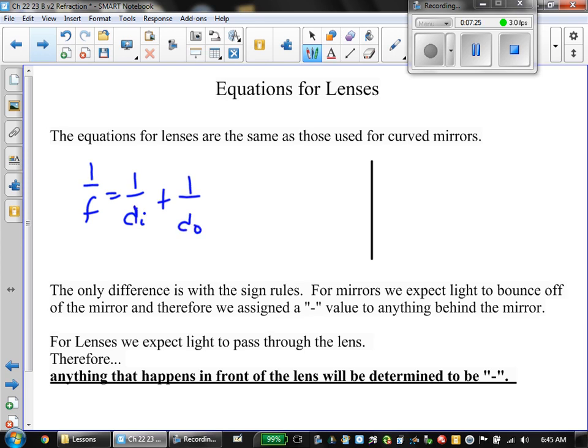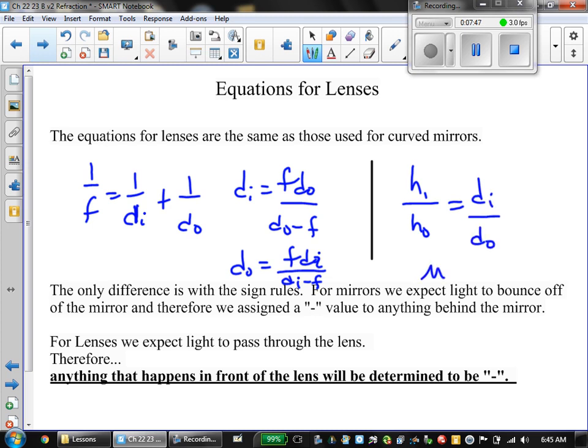Usually when I calculate di, I use f × do divided by (do - f), and do = f × di / (di - f). I do the exact same thing. We also have hi/ho = di/do, and the magnification is the absolute value of that. We ignore sign rules for that.